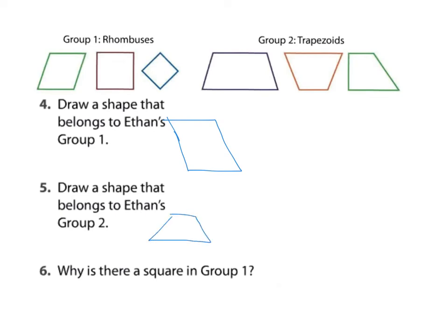Why is there a square in Group 1? The square is there because all sides are equal. Rhombuses have four equal length sides.